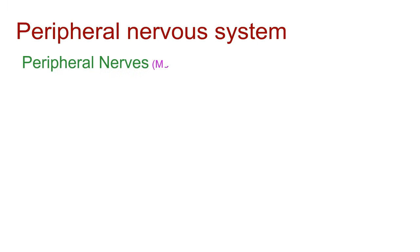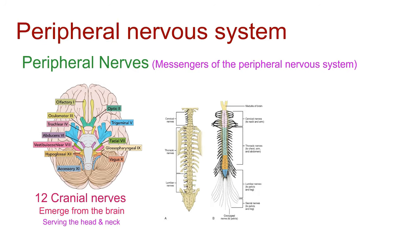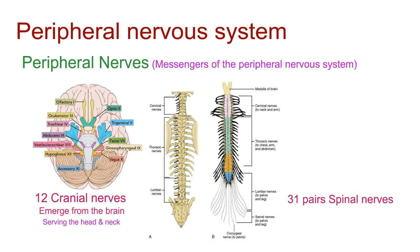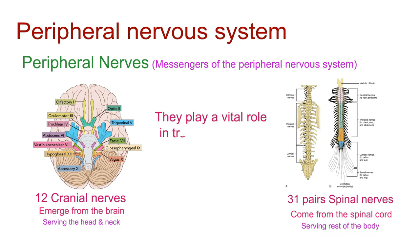Peripheral nerves are the messengers of the peripheral nervous system. Cranial nerves emerge from the brain, serving the head and neck, while spinal nerves, with their 31 pairs, come from the spinal cord, connecting the rest of the body. They play a vital role in transmitting both sensory and motor information.